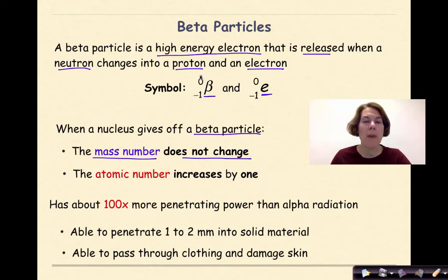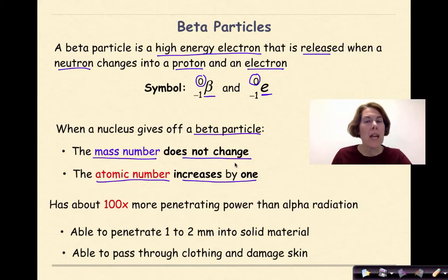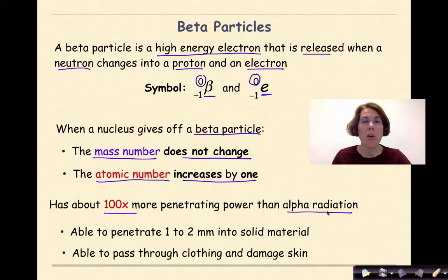When a nucleus gives off a beta particle, the mass number does not change, as shown by the zeros, but the atomic number increases by one. Beta radiation has about 100 times more penetrating power than alpha radiation — it's a stronger type of radiation, able to penetrate one to two millimeters into solid material and able to pass through clothing and damage skin.